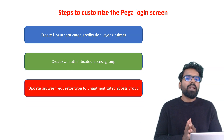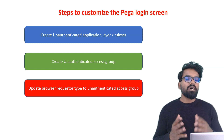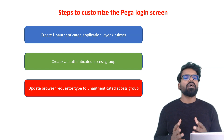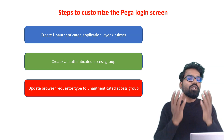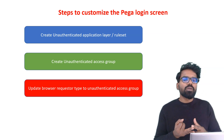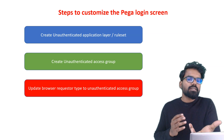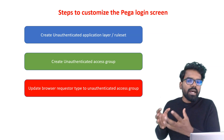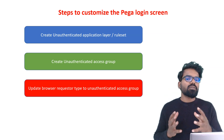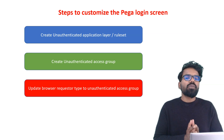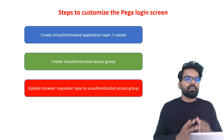The next step is you need to update the browser requester type to point to the unauthenticated access group. Because as soon as you launch the Pega URL in your browser, a new browser requester will be created. To create it, activities and UI rules all get executed. The browser requester type is where you mark the access group, and it is responsible for your browser session.